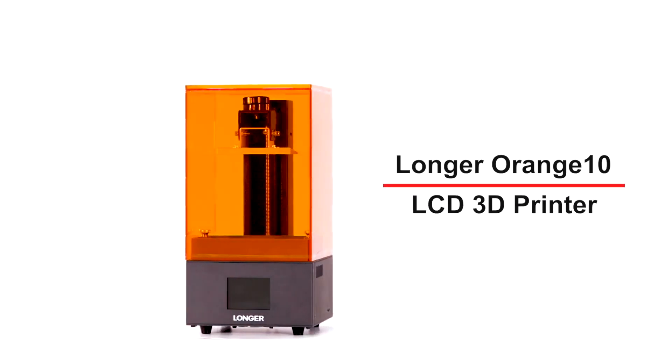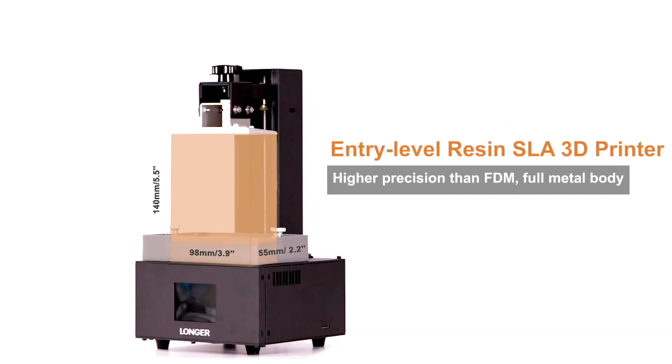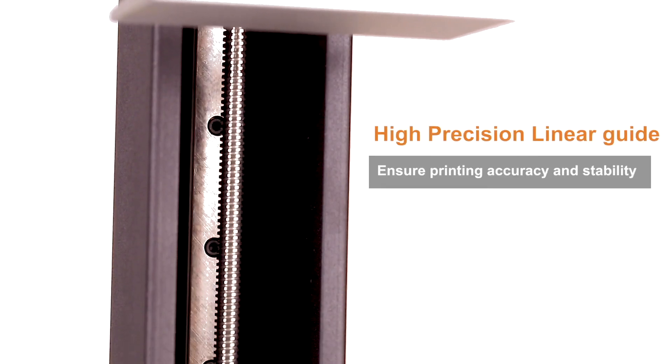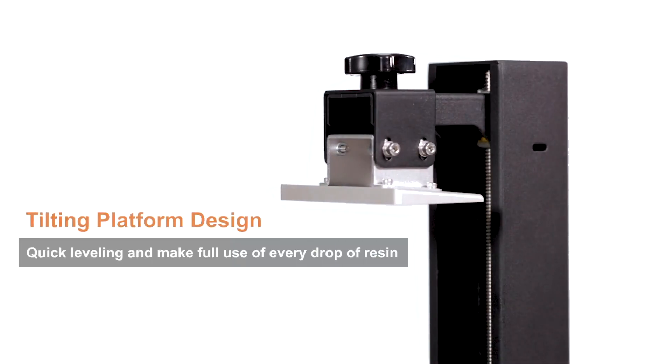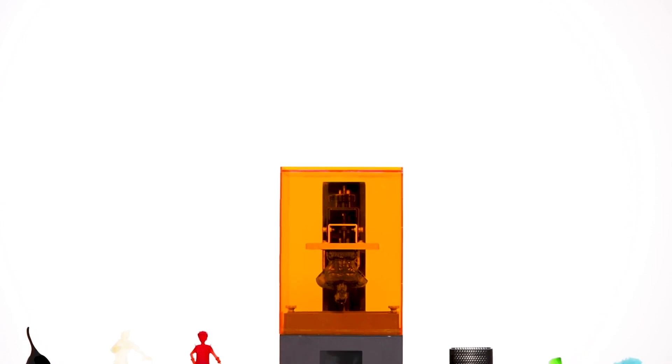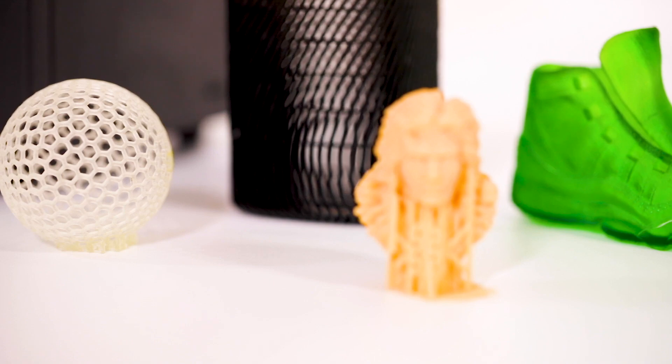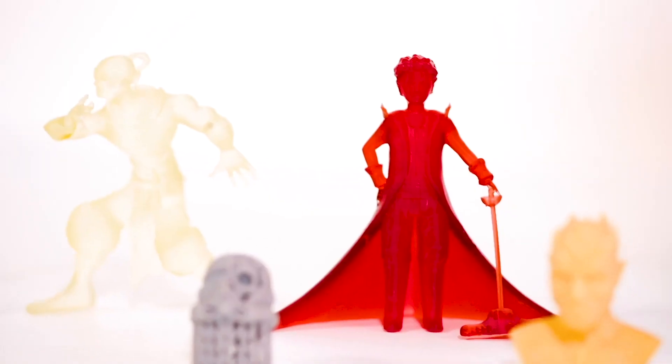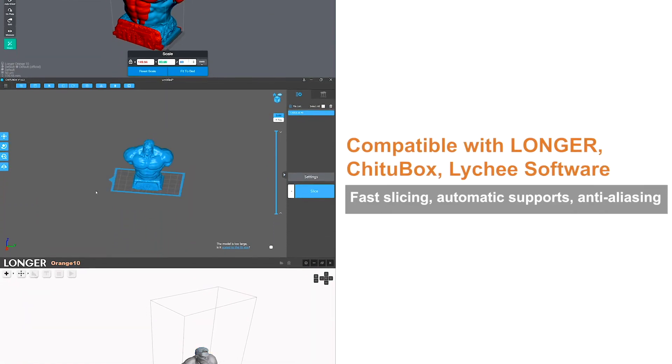For number 8 we have the Longer Orange 10. This printer has a build volume of 98 by 55 by 140 millimeters. It sells for $179 and its LCD has a resolution of 854 by 480 pixels which produces impressive quality prints for this level of resolution. This level of resolution is less than five times the resolution of the printers we're gonna cover next.